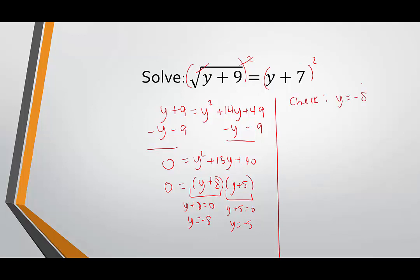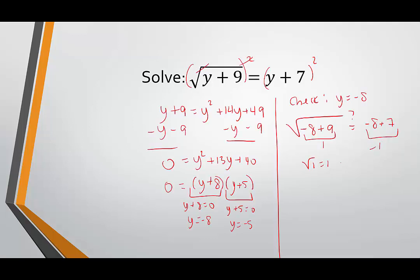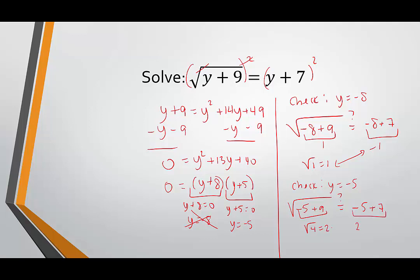Checking y equals negative 8: is the square root of negative 8 plus 9 equal to negative 8 plus 7? The square root of 1 is 1, but negative 8 plus 7 is negative 1. Those don't match — that is not a true equation. Negative 8 gets thrown out. Checking y equals negative 5: does the square root of negative 5 plus 9 equal negative 5 plus 7? The square root of 4 is 2, and negative 5 plus 7 is also 2 — 2 equals 2. We have one solution: y equals negative 5.